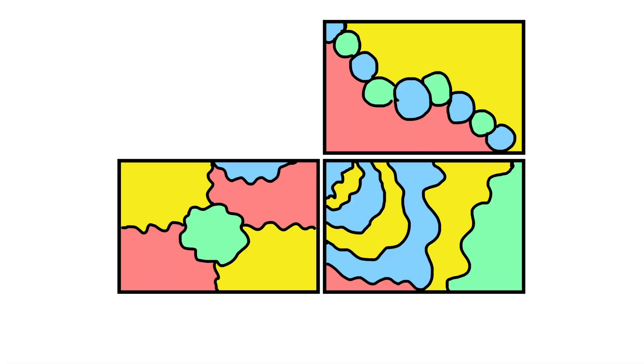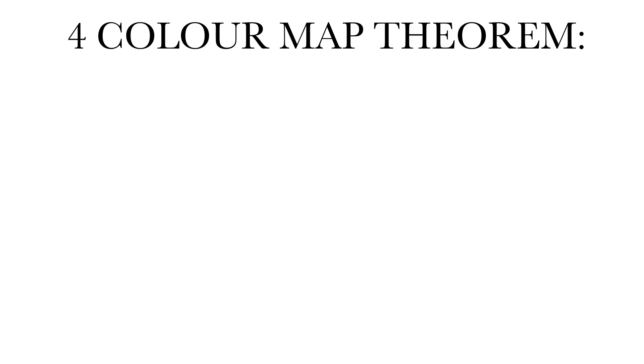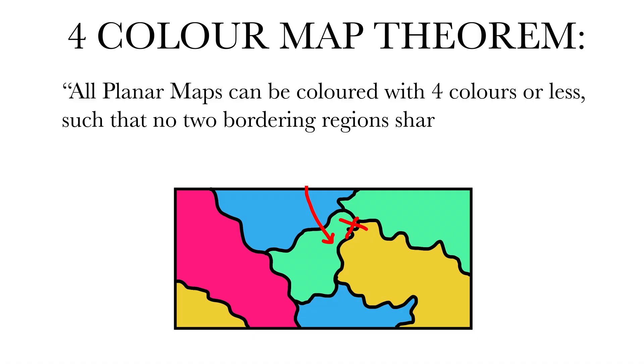In fact, you realize that you only need 4 colors to shade any map he's given you, no matter its shape, size, or complexity. You, my dear friend, have stumbled upon the 4-color theorem, which states that all planar maps can be colored with 4 colors or less.